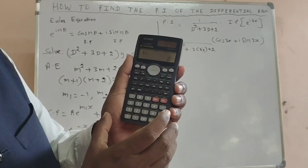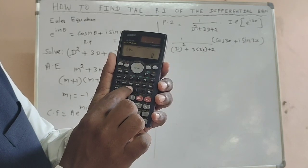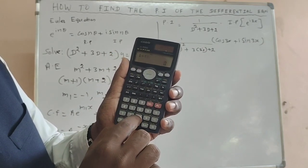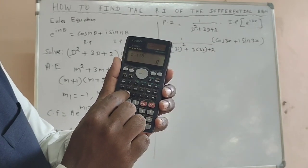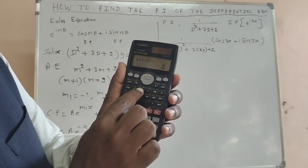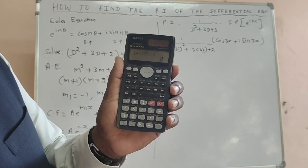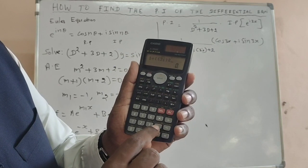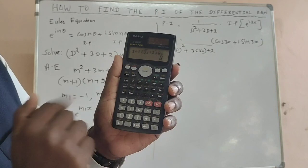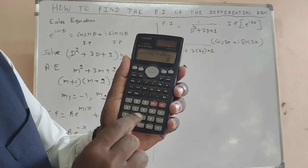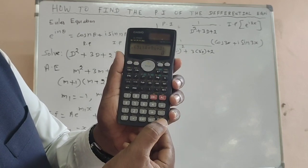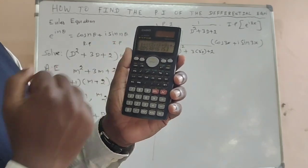Press 1 and divided by, put a double bracket. Then we have to put 3i — press 3, then the imaginary (i) button, so 3i. Close the bracket, then put square, giving (3i)². Then plus 9i (that is, 3 times 3i = 9i, using the i button), then plus 2. Close the bracket, then press equal. We get a value.